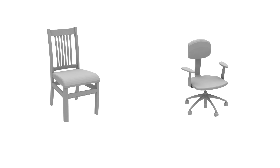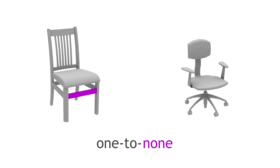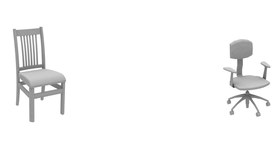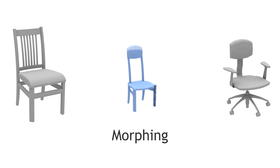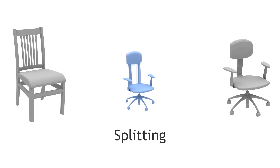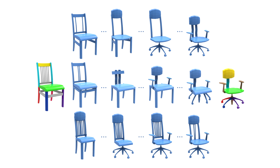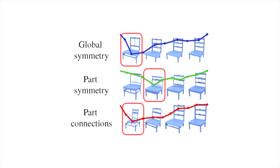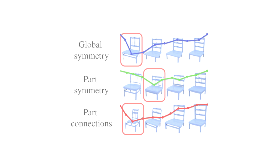Part correspondences between the source and target can be one-to-one, one-to-many, or one-to-none, where a part is matched to a region for potential part growth. A blending operation is defined depending on the type of correspondence. These operations include geometry morphing, part shrinking, merging, splitting, and growing. By changing the order of these operations, different blending paths can be generated. In order to produce plausible blended shapes, our method implements structure preservation by considering parts symmetry and connectivity. Please refer to the paper for more details.